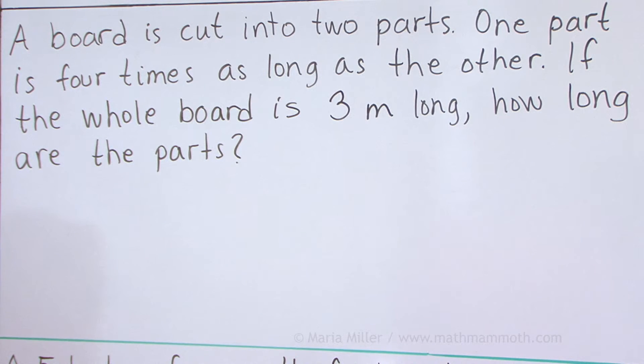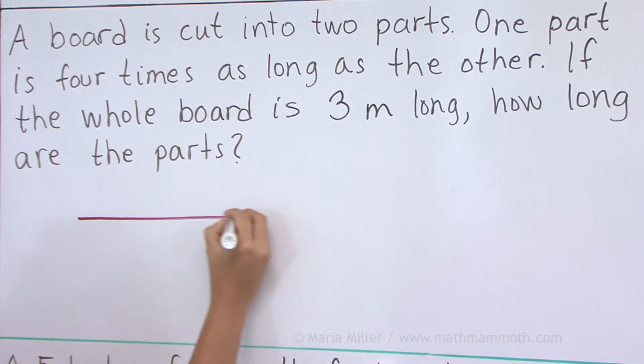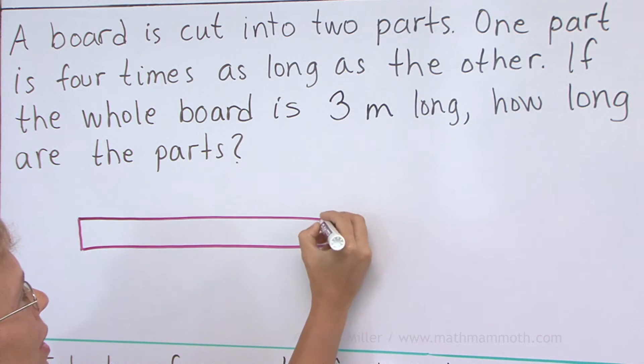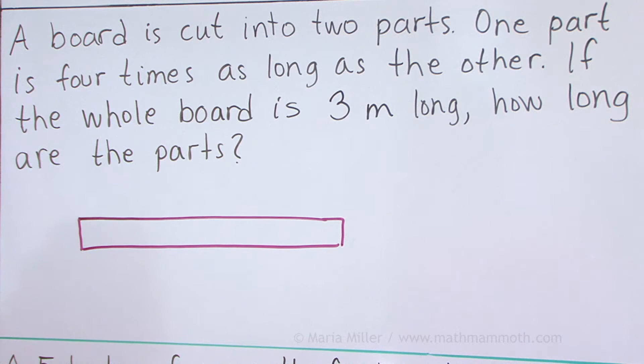Okay, like I said, we're going to use bar models, so let me draw one here. And this time it happens to be a board in the problem. And we know its total length, so I'm going to mark it here, three meters. And somebody cuts it in two parts, but not equal parts, not right in the middle, but somewhere so that the one part is, or the longer part, is going to be four times as long as the other part.